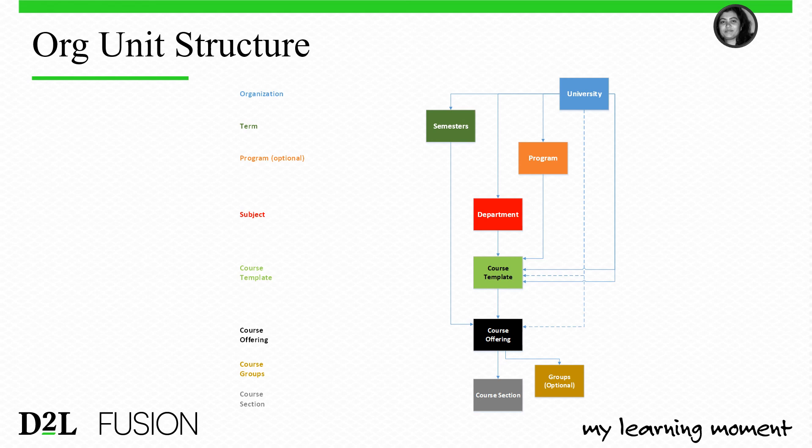Here is the high-level org unit structure inside SNHU. The top-level org unit is University, with child org units cascading down. Semesters or terms and programs are optional. Department equals subject. The hierarchy goes: course template, course offering, course groups, and course sections. Course offerings must have at least one template parent. Sections and groups can only be children of course offerings. Templates can only be children of semesters, departments, or programs.